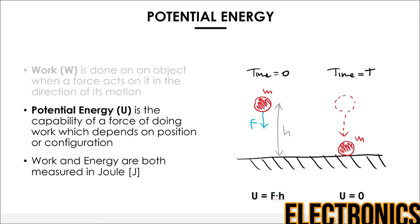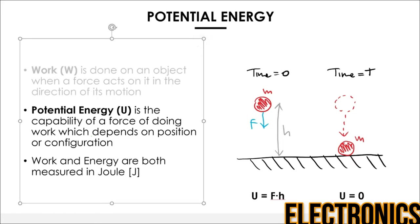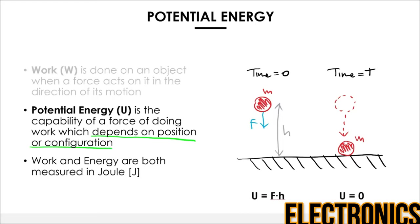Now that we understand what work is, we can talk about potential energy U, which is the capability of a force of doing work, and which depends on position or configuration. For example, a ball of mass M at a certain height H is subject to the force of gravity, which will push it down to the ground. After some time, the object goes from height H to zero.